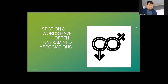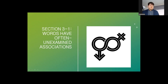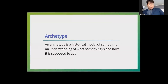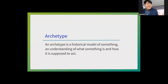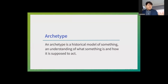Sometimes words have implicit meanings that are not personal or team-based. Some implicit meanings reflect outdated or negative associations — I call this the historical association of archetypes. An archetype is a historical model of something, an understanding of what something is and how it's supposed to act around people. Archetypes unconsciously tell us who is typically in a role.